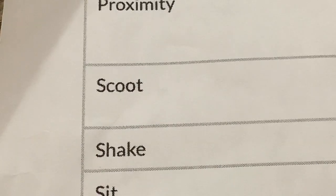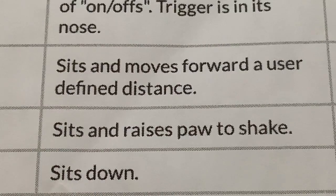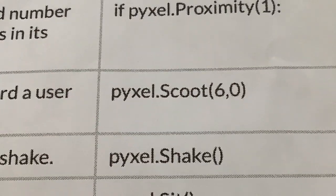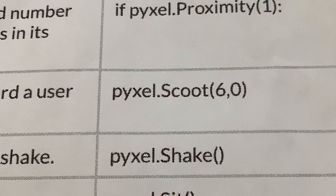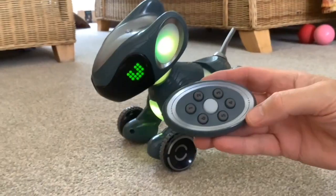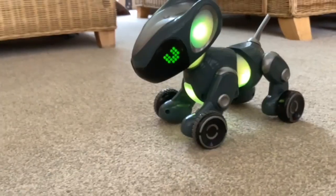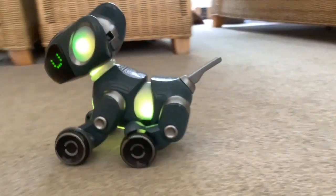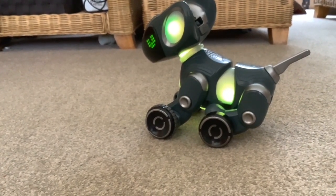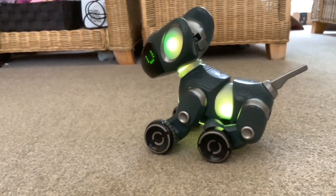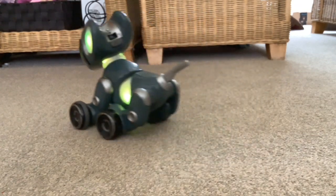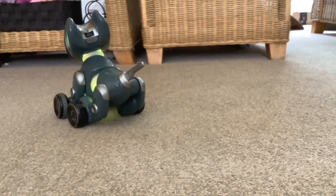The next command is scoot — Pixel sits and moves forward a user-defined distance. The Python code is pixel.scoot, with six comma zero in the brackets — six inches, units of inches. That's number four. I could actually make him do that again, but he's already sat down this time. So you get a little twitch if he's already sitting.